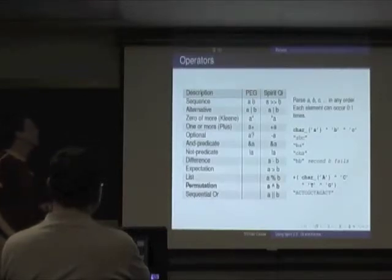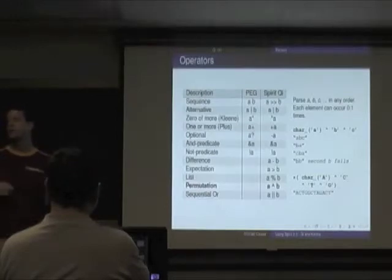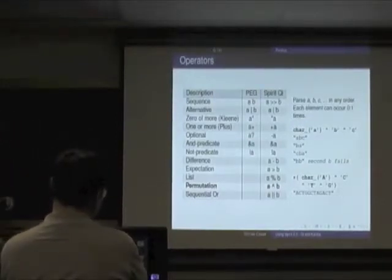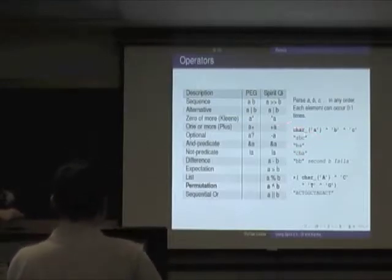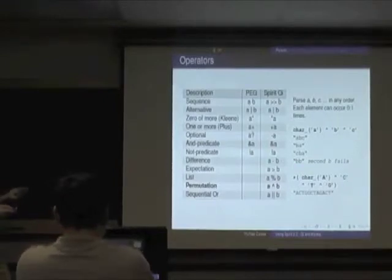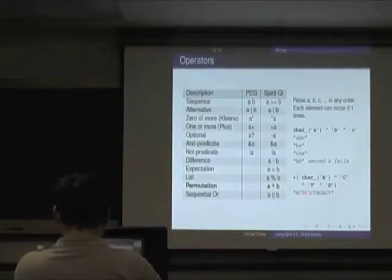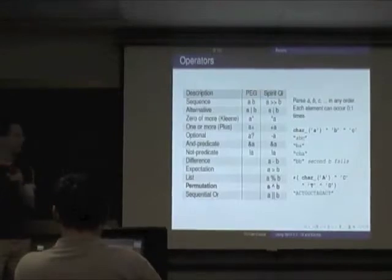Permutation says we're going to parse A's, B's, C's in any order, but they can only occur zero or one time. So all combinations of a, b, c pass without any problems, but two b's would be a problem. Here we're parsing a DNA sequence — parsing A, C, T, G permutations using kleene star. The first sequence is A-C-T-G, the second G-C-T-A, then G-A-C-T. We don't care what order they come in.